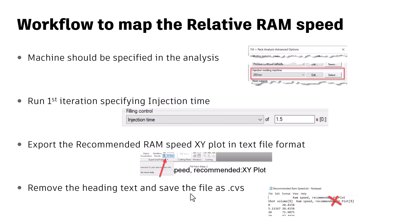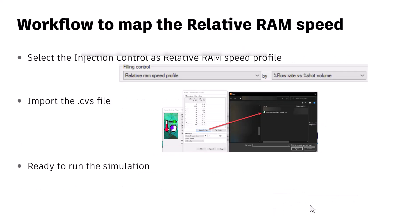Go into the plot options and export that in text file format. Once you have it in text file format, open it in any text editor — I have it open here in Notepad. Remove the first two lines, which say something like 'RAM speed recommended XY plot' or 'shot percentage versus RAM speed recommended percentage plot.' These two lines have to be removed. Then save that file and change the extension to .CSV.